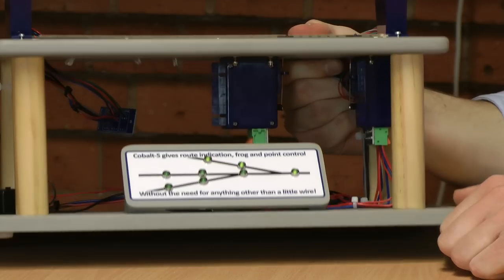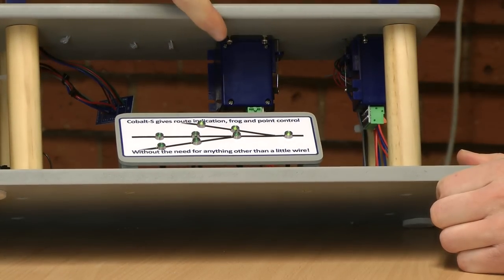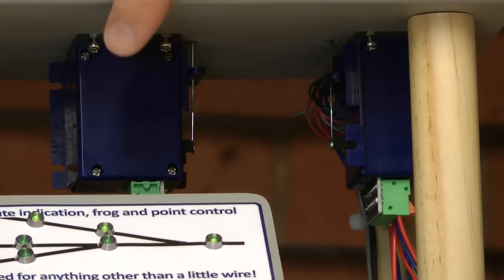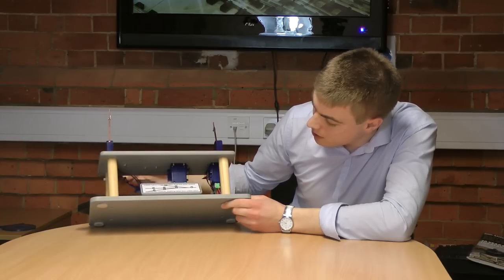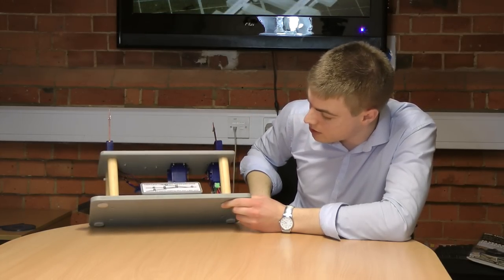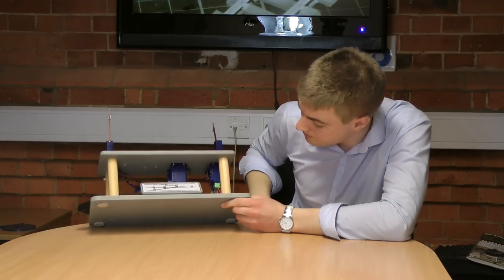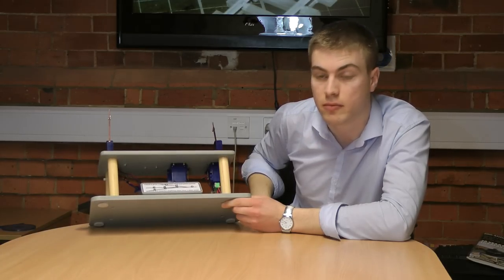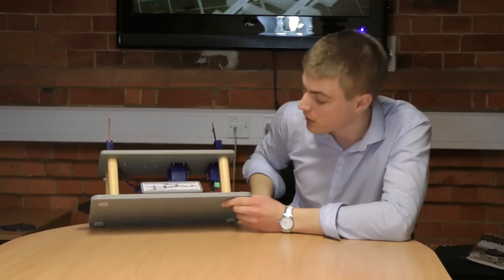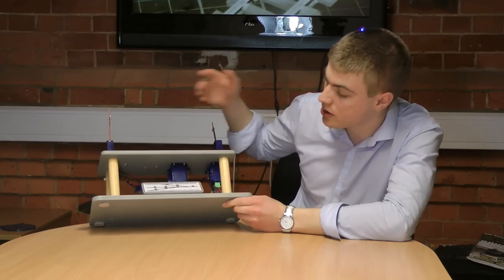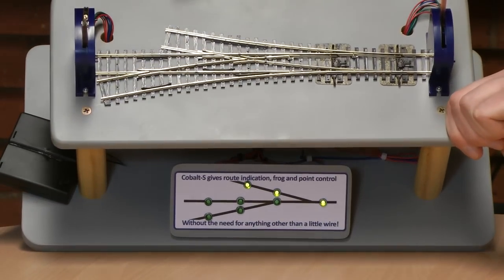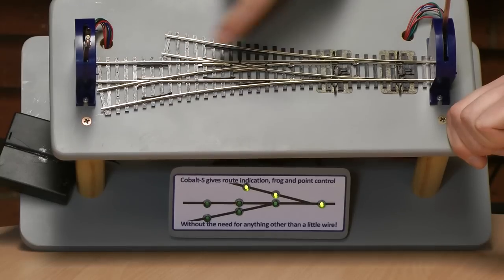Moving on to the underside of this demonstration piece, you will see that we have fitted this three-way point with two motors, one for each point set. Now these are the cobalt motors that DCC concepts produce. They run on 9V DC power.